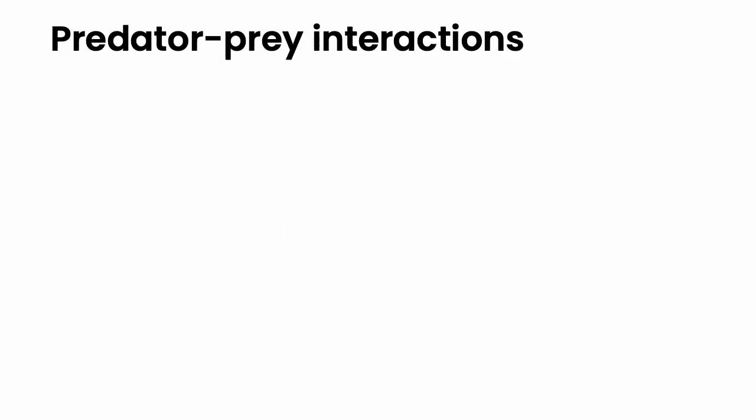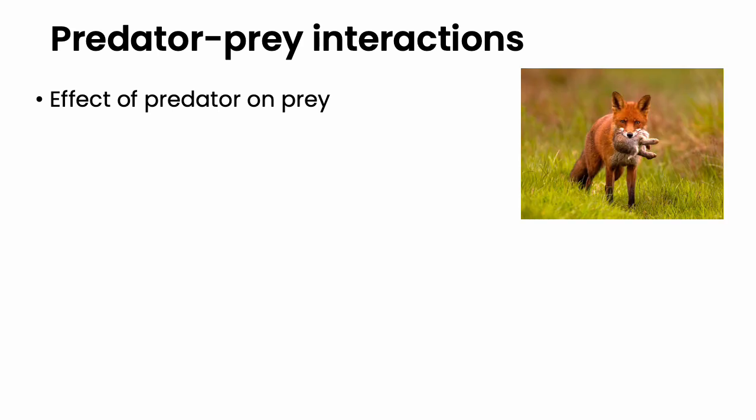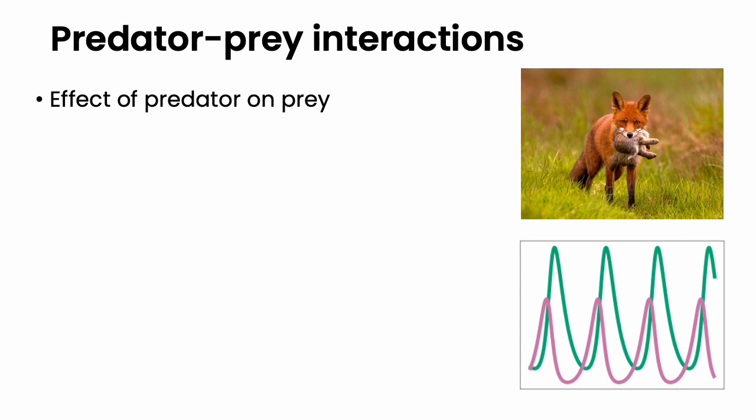When one talks about predator-prey interactions, one usually talks about the effect of the predator on the prey. That is, the predator kills the prey while increasing its own number, and this can result in observations such as the Lotka-Volterra dynamics.